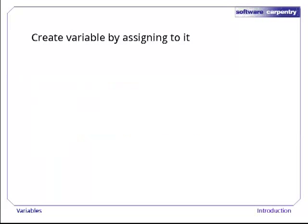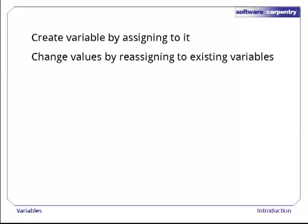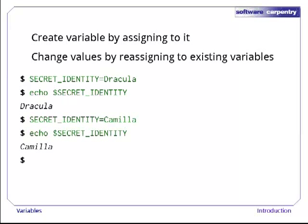Creating a variable is easy. Just assign a value to a name using equals. Here, we set our secret identity to be Dracula, check it, change it to Camila, and check again.